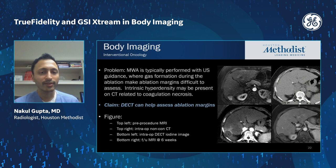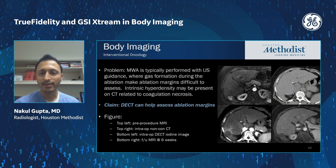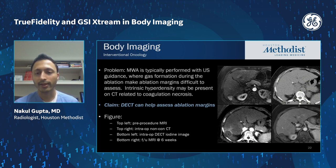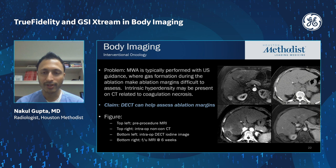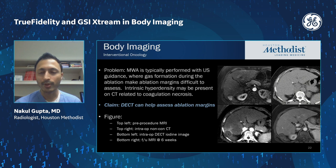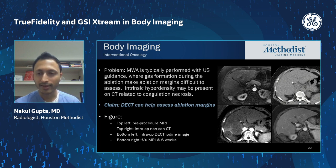We also use GSI or dual energy in interventional oncology. Here's an example: the top left MRI shows an enhancing mass — an HCC in a cirrhotic patient — in the posterior right hepatic lobe. On unenhanced CT, the lesion can't really be seen. After ablation, a GSI scan showed the ablation cavity perfectly matching the lesion with a surrounding rim of hyperemia but without any nodular or mass-like viable tumor. Comparing with subsequent MRI six weeks later confirmed a perfect match between the ablation cavity on the GSI image and the MRI.